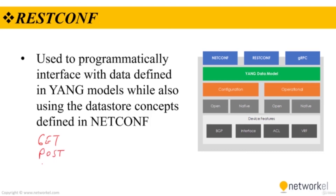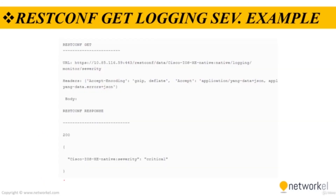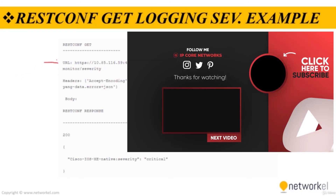RESTCONF supports the following HTTP methods and CRUD options: GET, POST, PUT, DELETE, and OPTIONS. The RESTCONF requests and responses can use either JSON or XML structured data formats. On the screen you can see a brief example of a RESTCONF GET request on a Cisco router to retrieve the logging severity level that is configured. This example uses JSON instead of XML, and you can see the request URL and the response from RESTCONF — a 200 status code, meaning the request was successful.